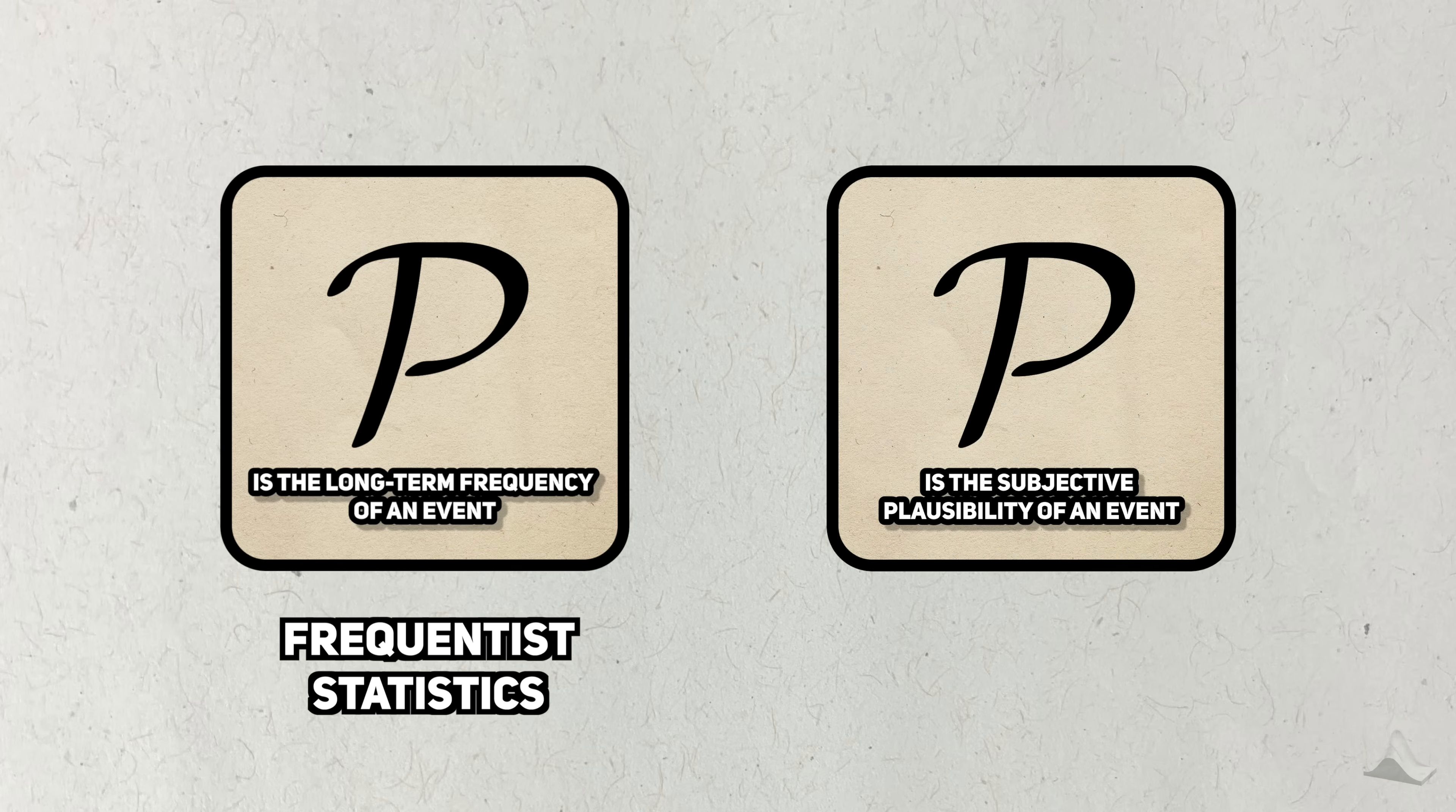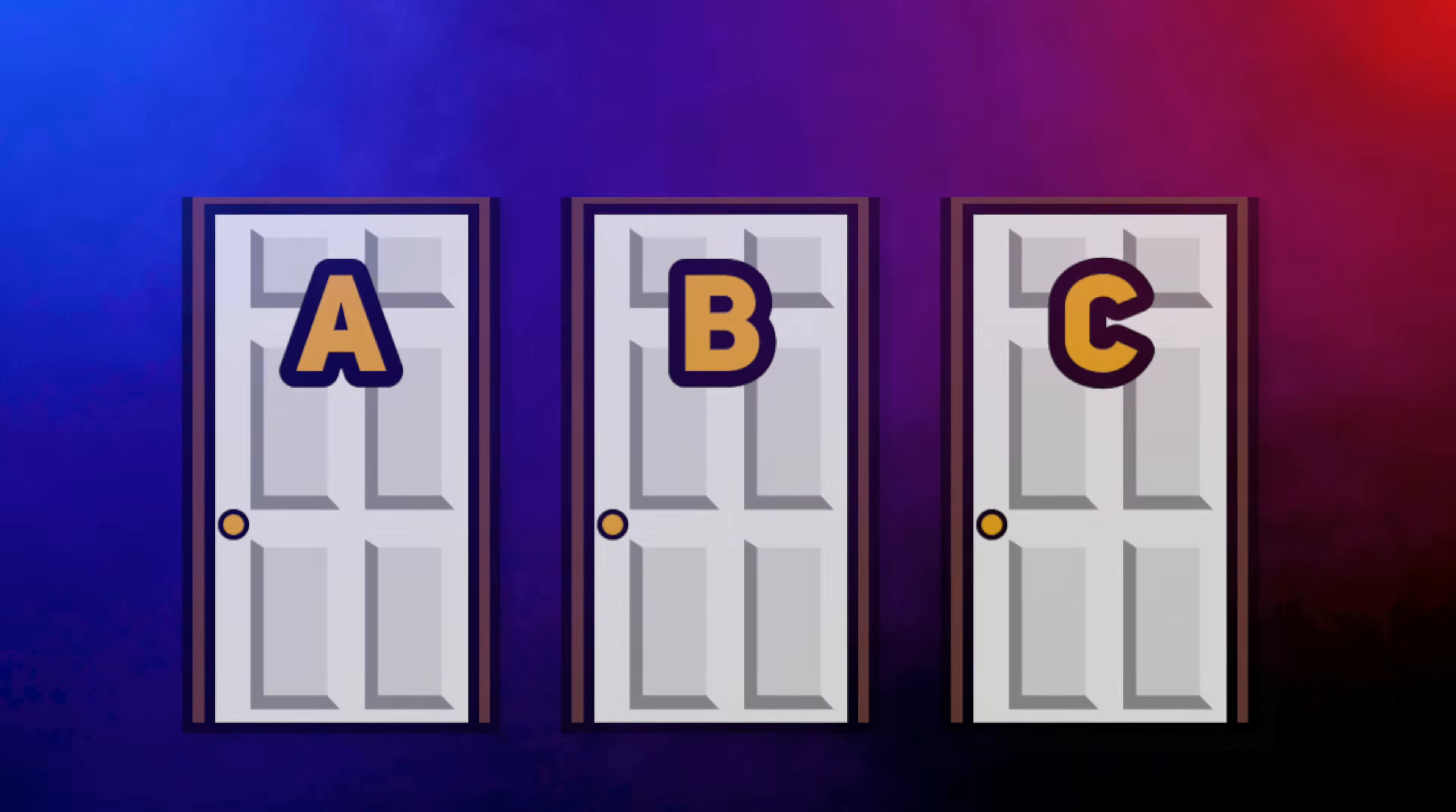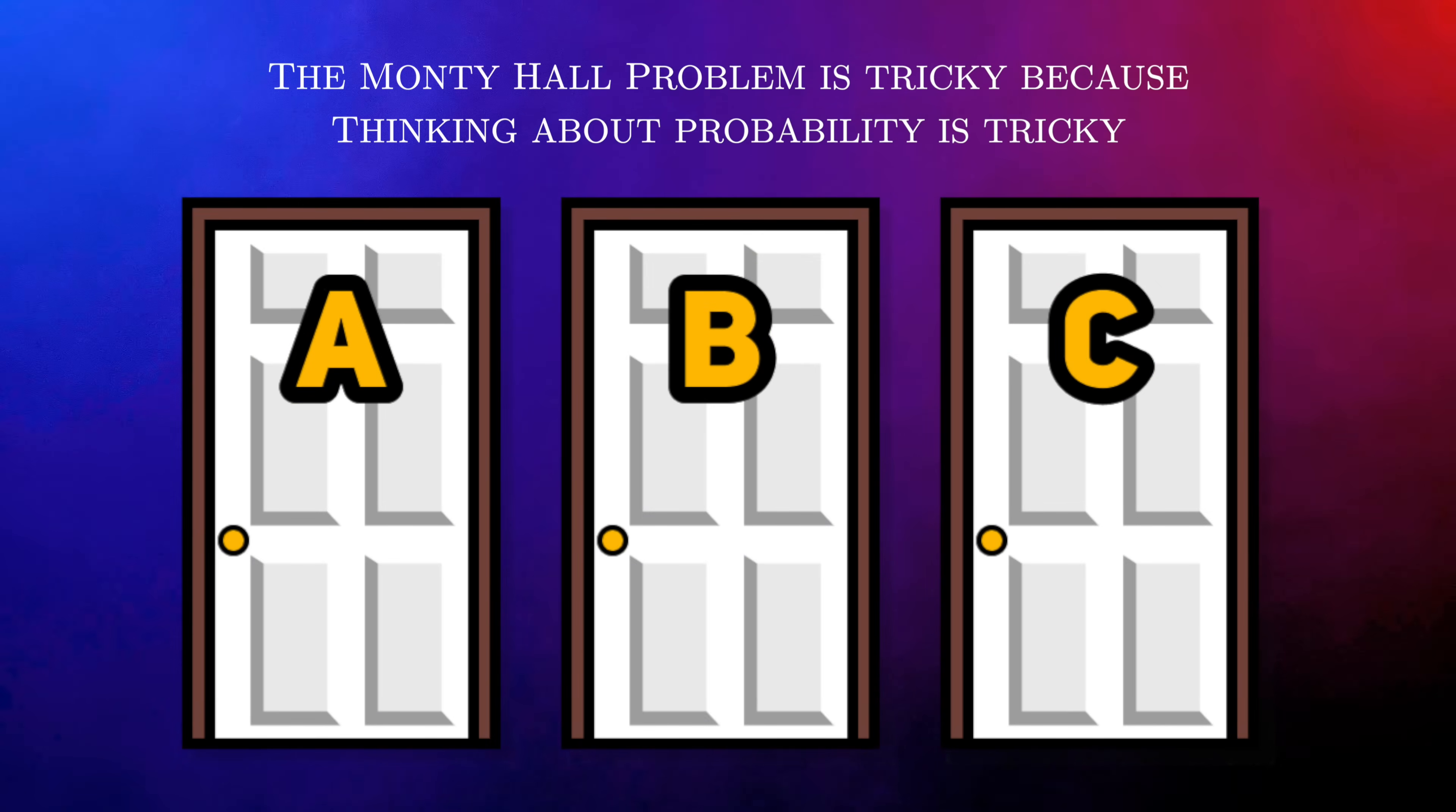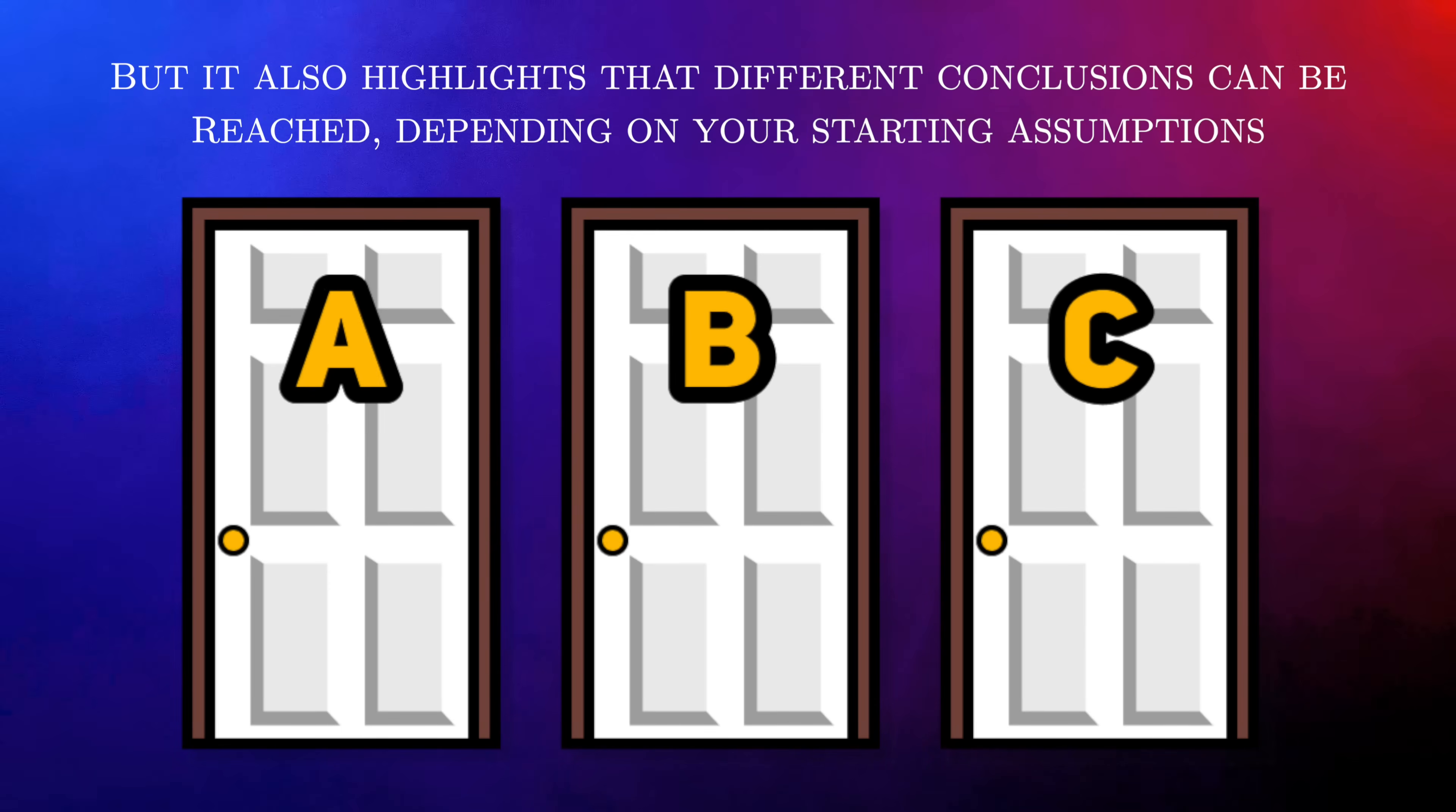If you view probability as subjective belief, then you get Bayesian statistics. The better way of doing statistics. Don't at me. From one view, the Monty Hall problem is tricky because probability is generally tricky for most people. But the problem also highlights that different sets of conclusions can be reached if you start from different assumptions.